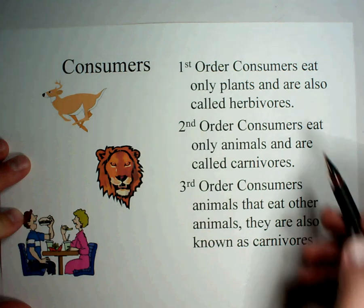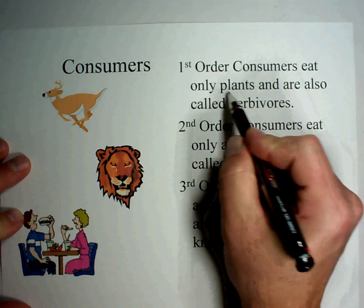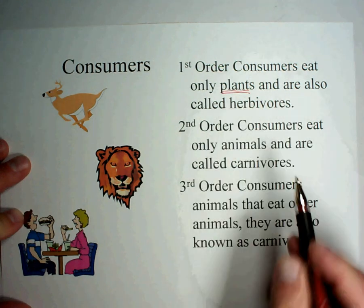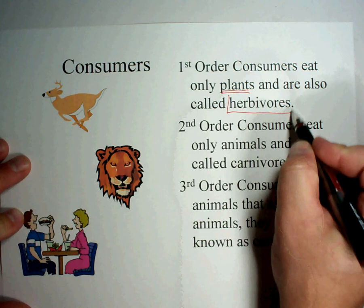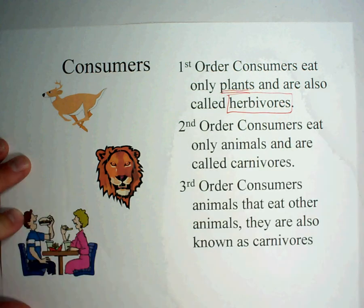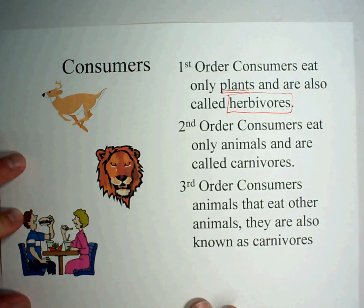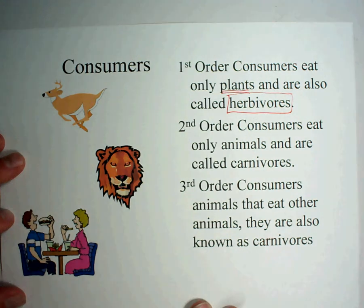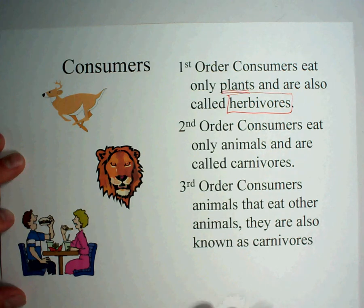The first order consumers only eat plants — they're the herbivores. Like deer and rabbits, they only eat grasses and small plants. So they get their energy directly from the plants, which are producers that get their energy from photosynthesis and sunlight.